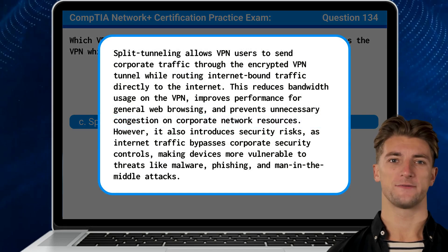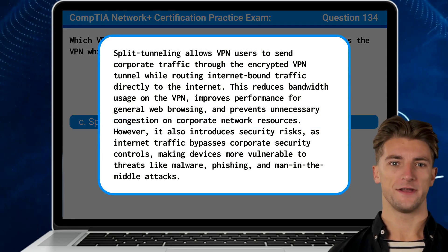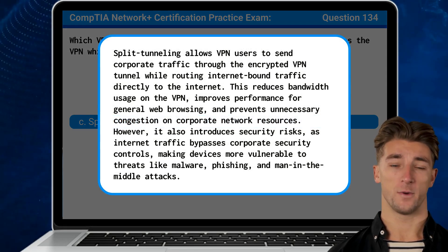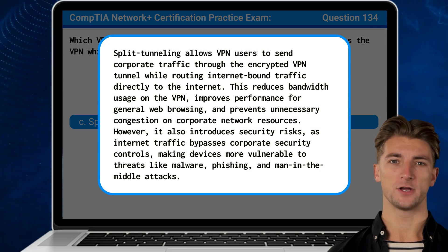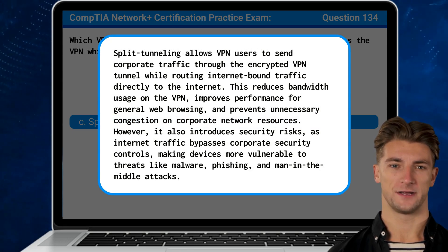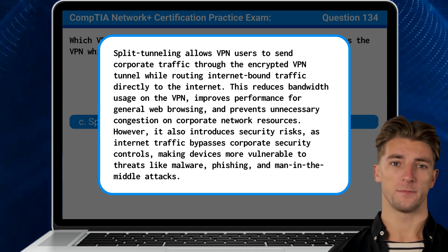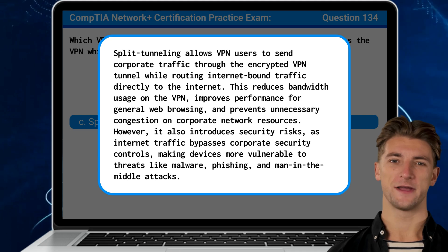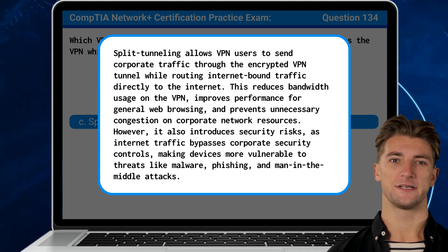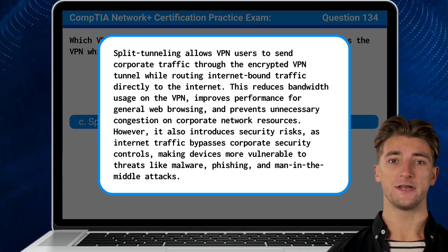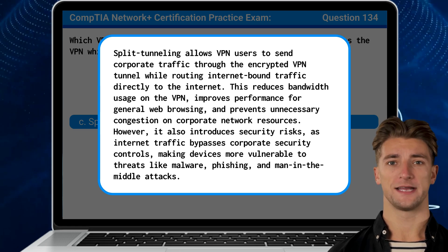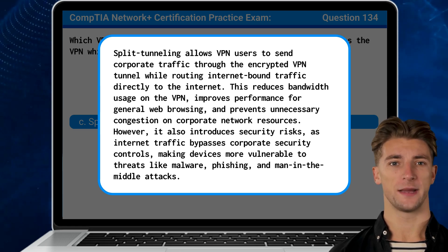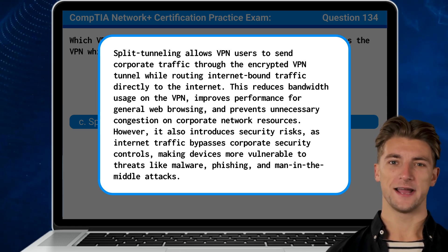Split tunneling allows VPN users to send corporate traffic through the encrypted VPN tunnel while routing internet-bound traffic directly to the internet. This reduces bandwidth usage on the VPN, improves performance for general web browsing, and prevents unnecessary congestion on corporate network resources. However, it also introduces security risks as internet traffic bypasses corporate security controls, making devices more vulnerable to threats like malware, phishing, and man-in-the-middle attacks.